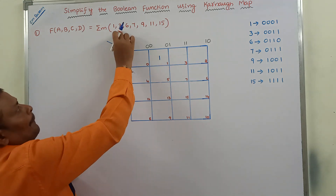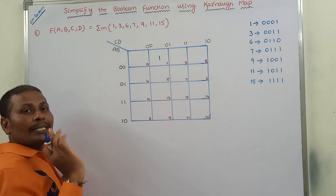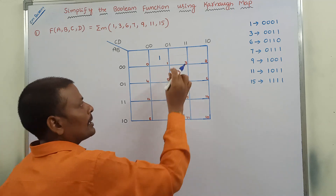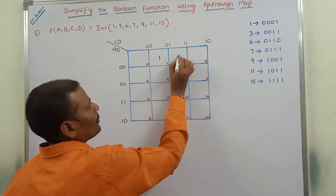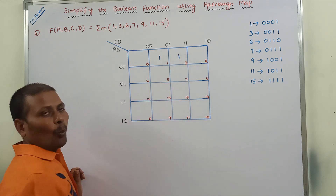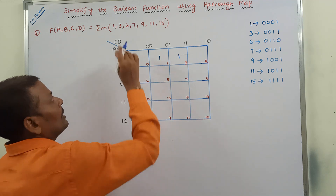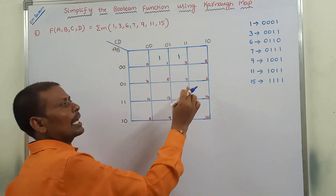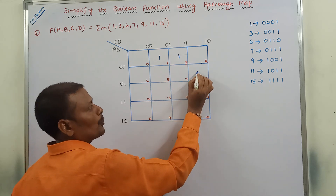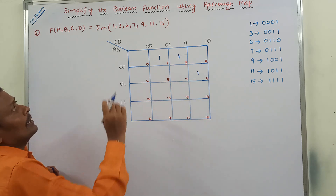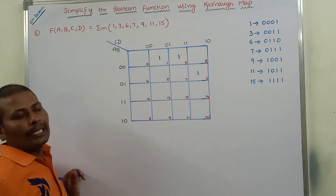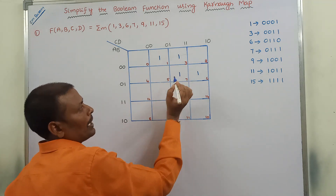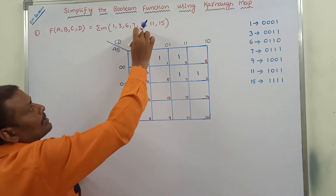Next, min term 3 — placing 1 in cell number 3. Next, min term 6 — identifying cell number 6 and placing 1. Next, min term 7 — this is cell number 7, placing 1.